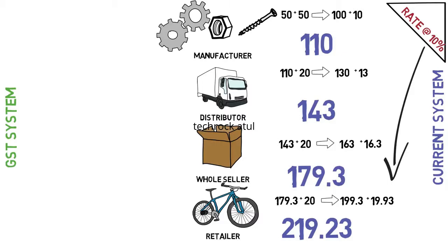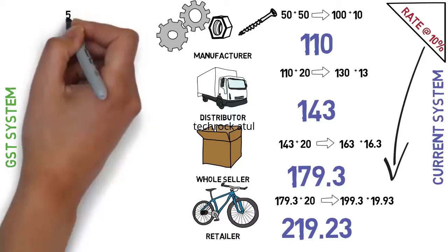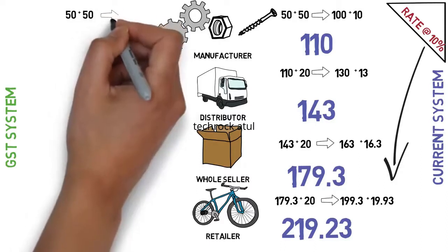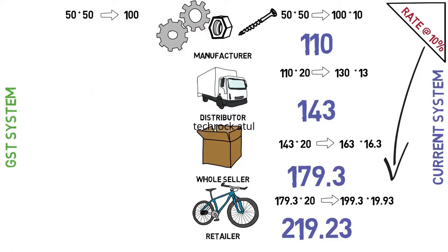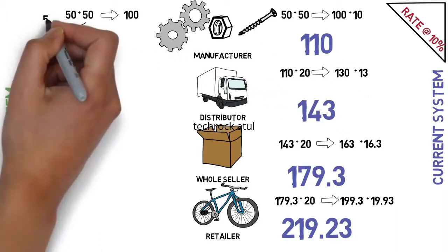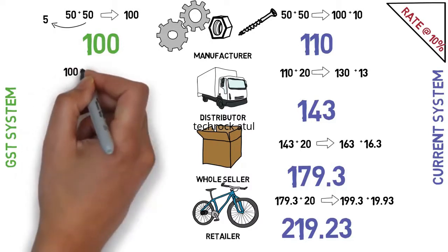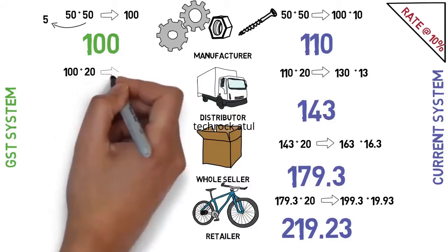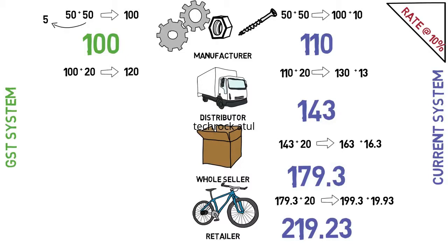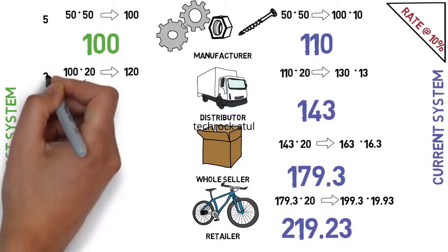This is how the current taxation system works in India. Now we will take the same example under GST. Raw material of 50 rupees and manufacturing value of 50 rupees make the product 100 rupees. But this time the manufacturer pays tax only on the value added by him, which is 50 rupees — so he pays 5 rupees (10% of 50), and the cost of the product for the distributor is 100 rupees. The distributor adds 20 rupees profit, making it 120 rupees, and pays tax of 2 rupees on his profit of 20 rupees.